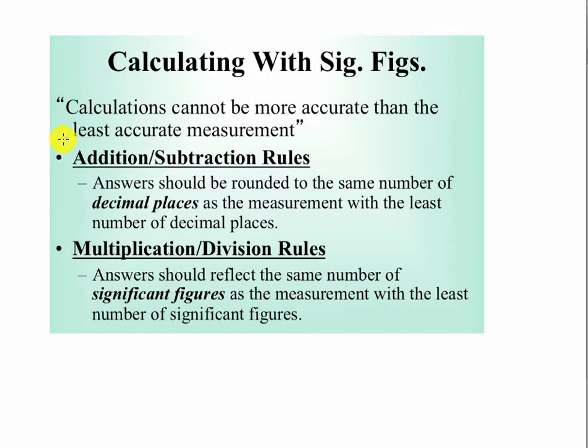The rules for calculating: here's the rules you can write these down, but your calculations can't be any more accurate than the least accurate measurement. It's all about measurements, guys. It's all about that measurement that's the weakest or the least accurate. It has to be dictated through everything you do.